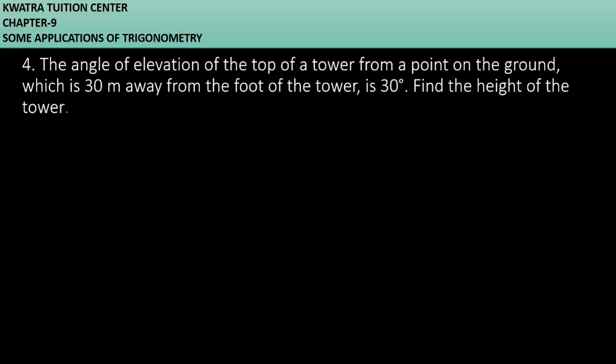Let's start with question number 4. It says the angle of elevation of the top of a tower from a point on the ground which is 30 meter away from the foot of the tower is 30 degree. Find the height of the tower.